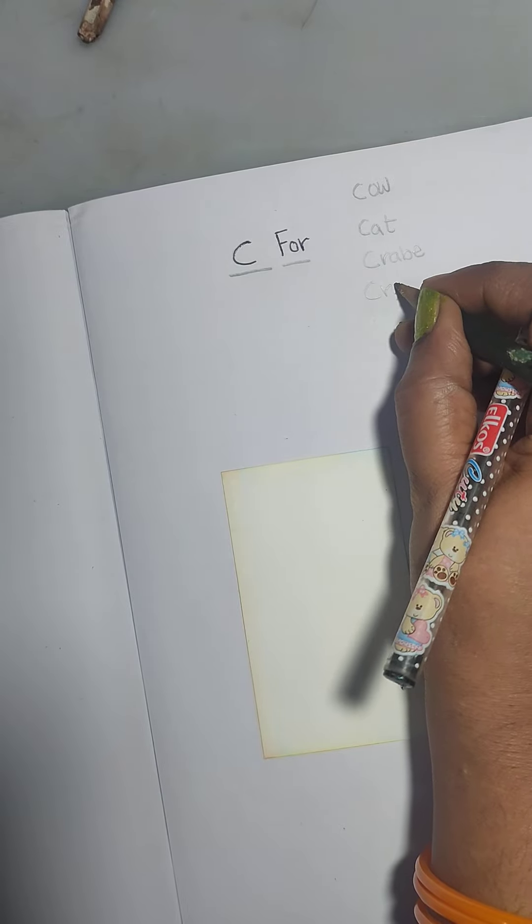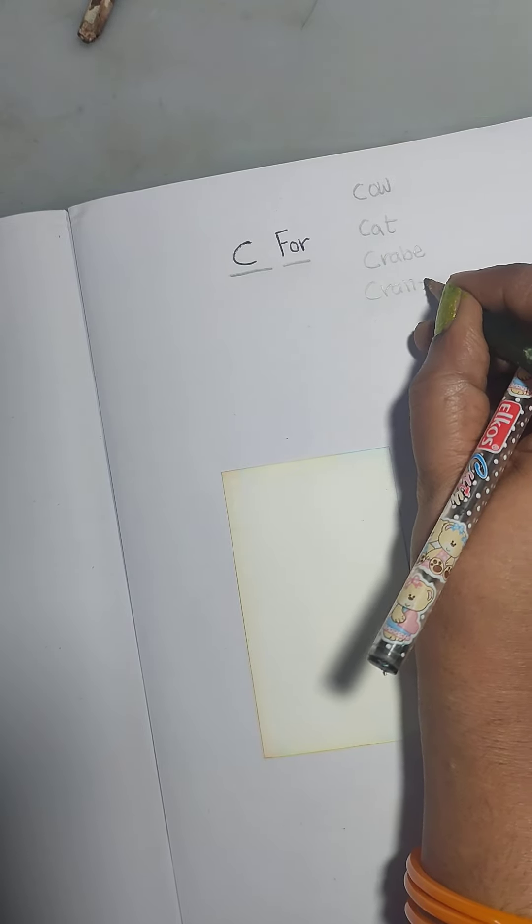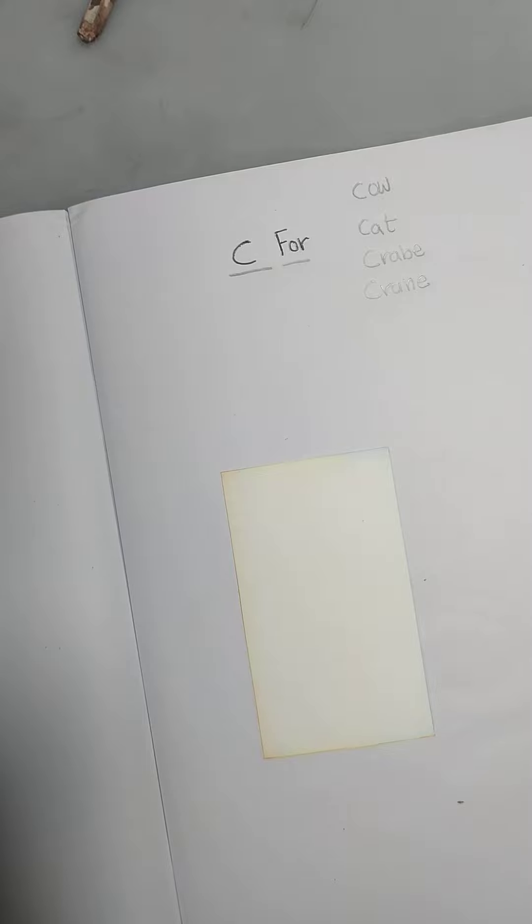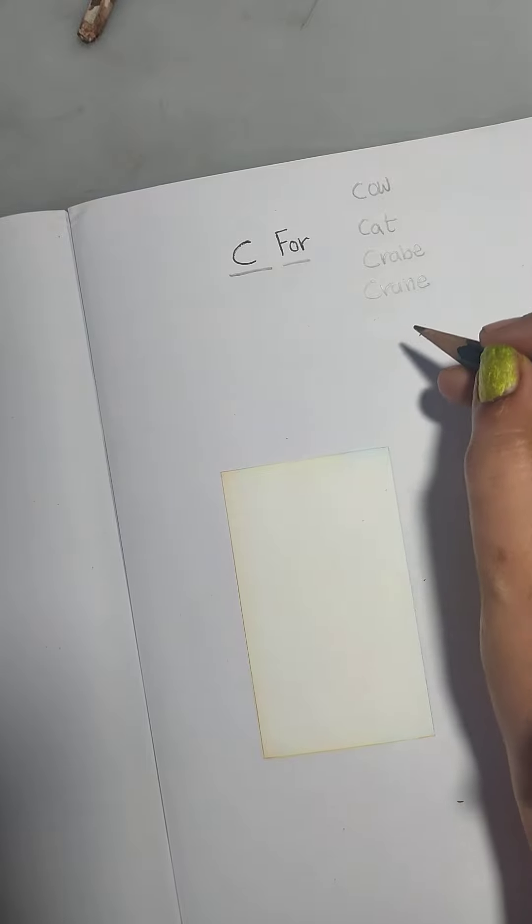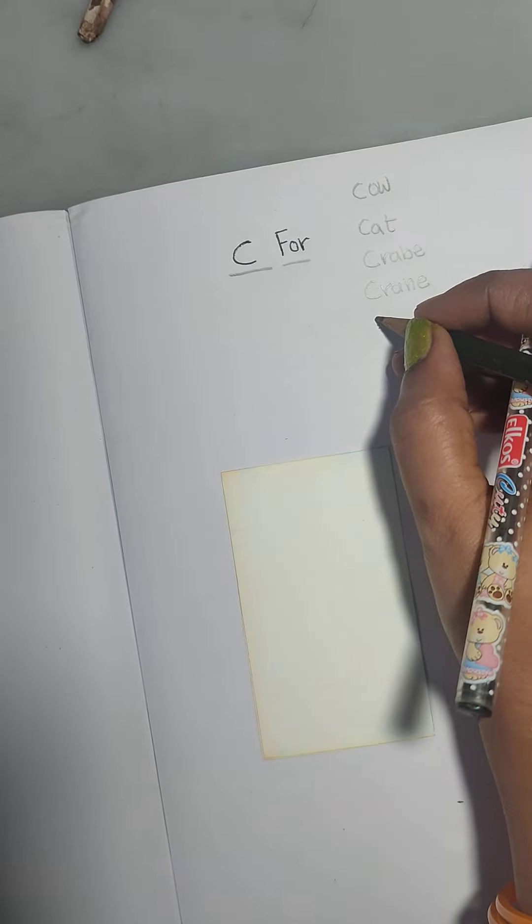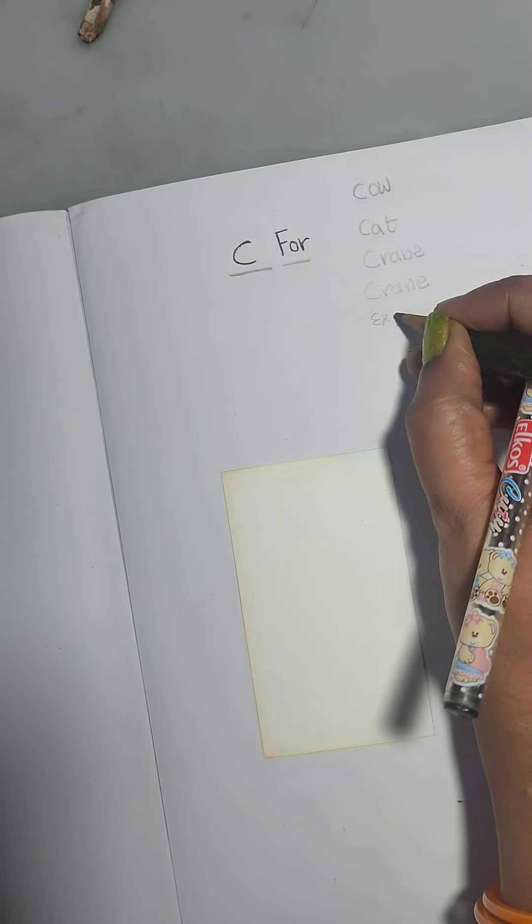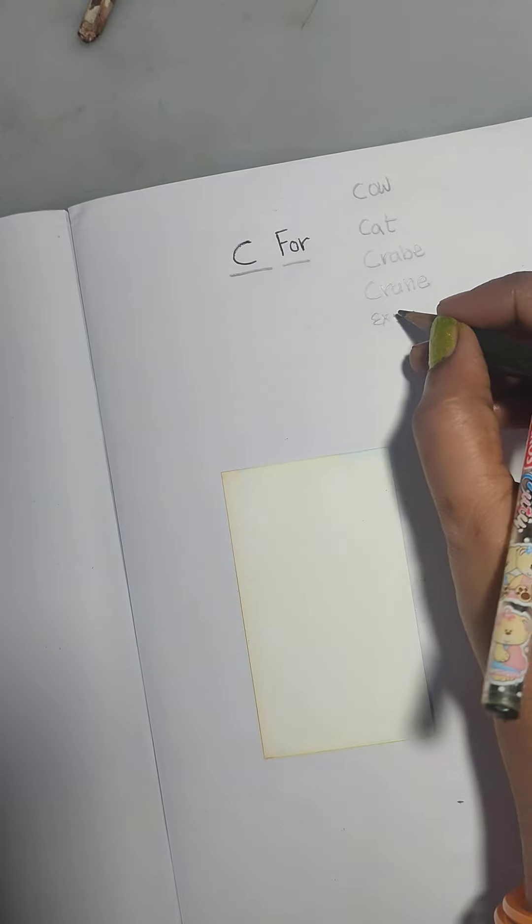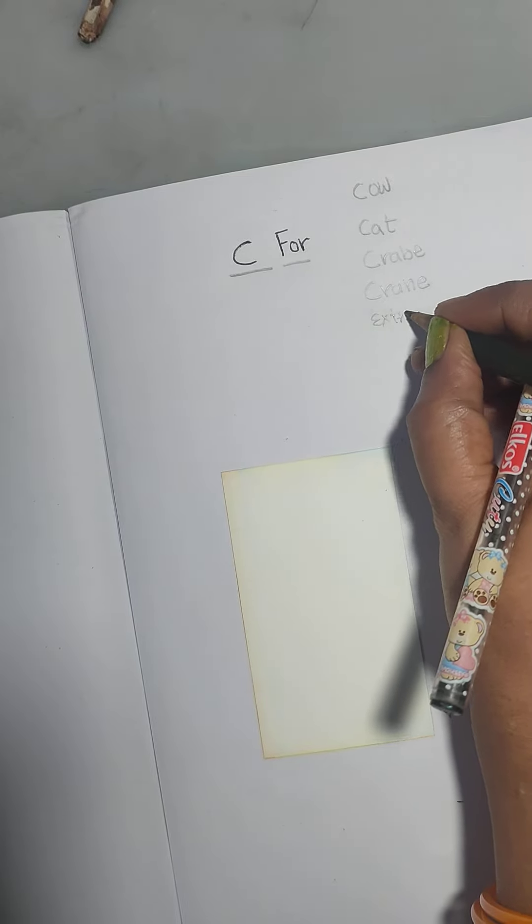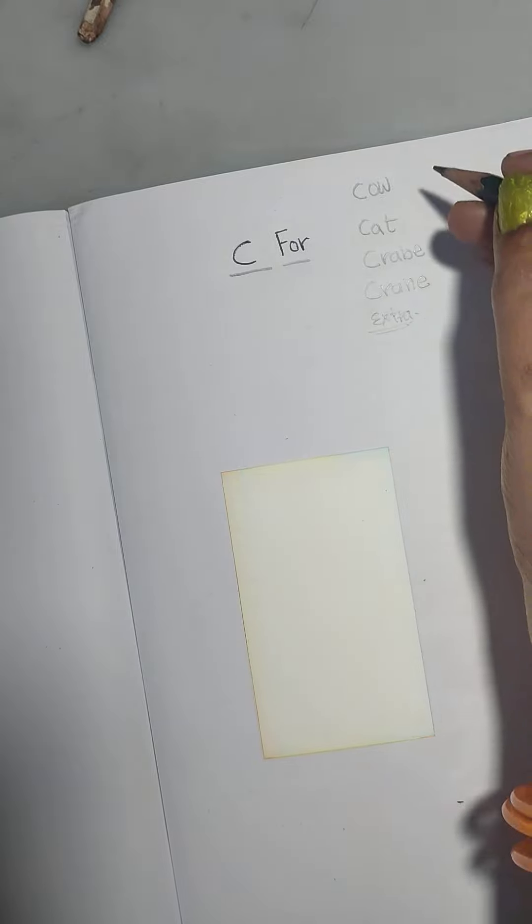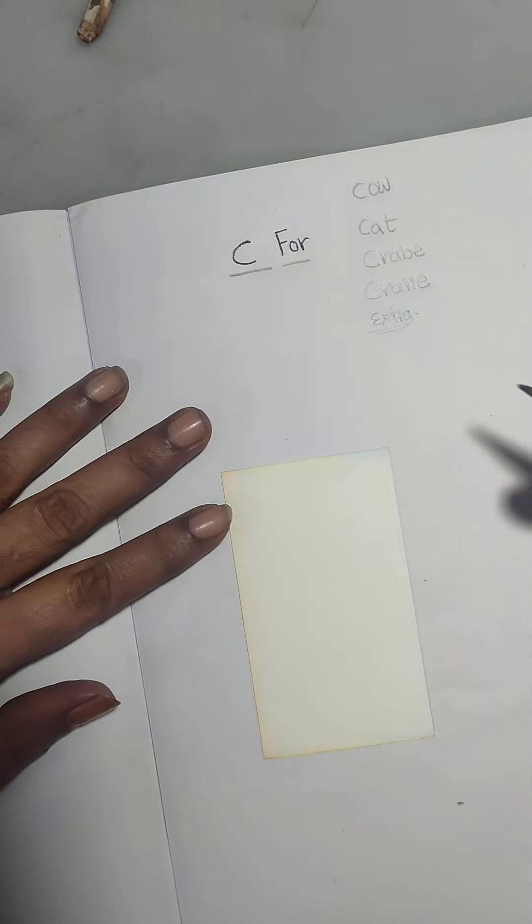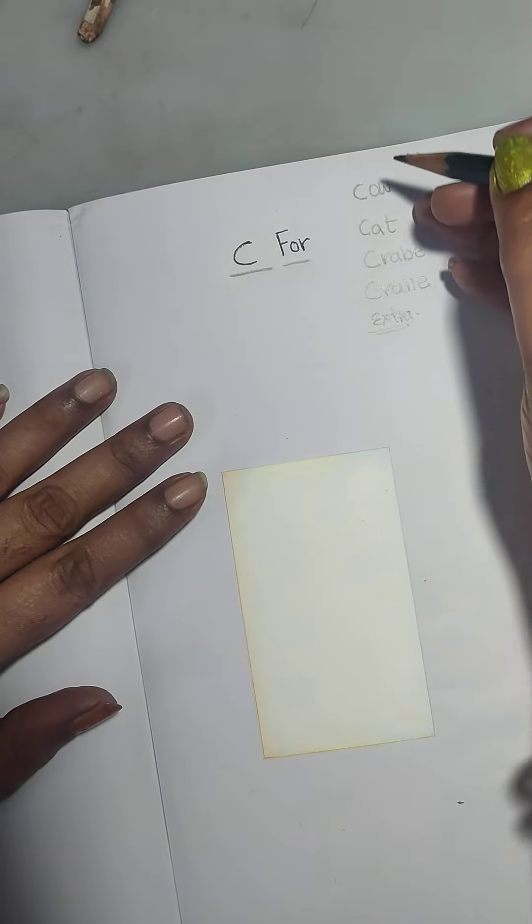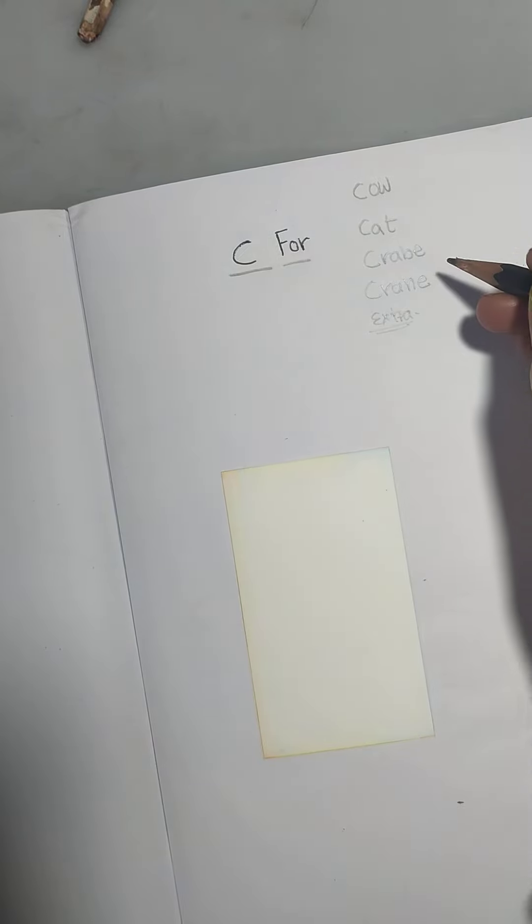Crane. C for. Many many examples. Many examples having with C. Okay? We have to take today. Which one we are taking today? Crab. Okay?